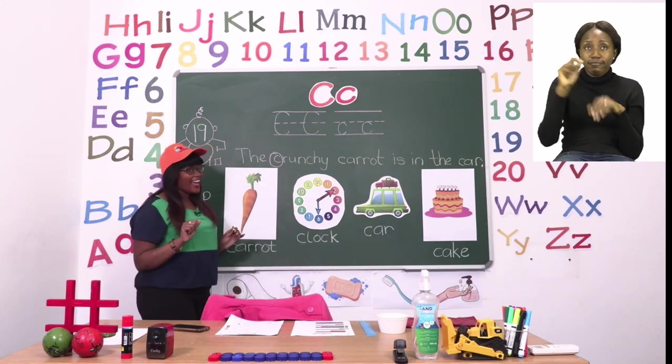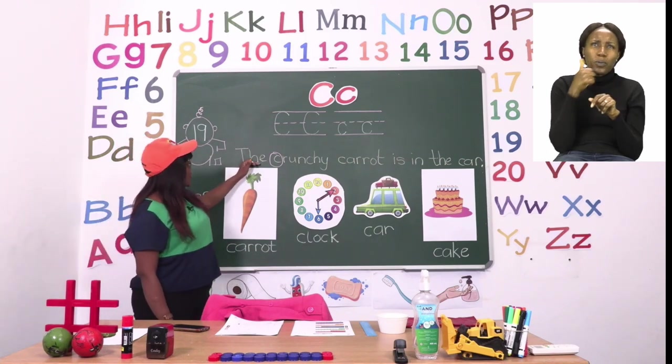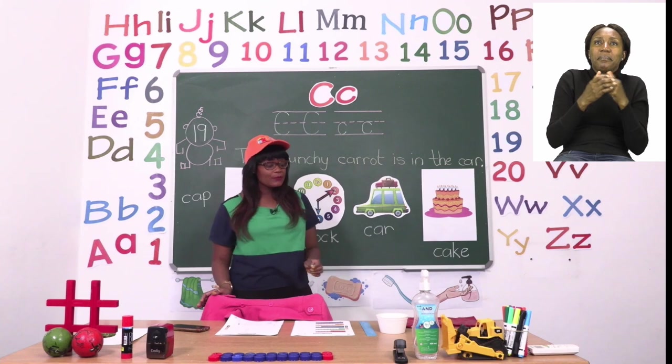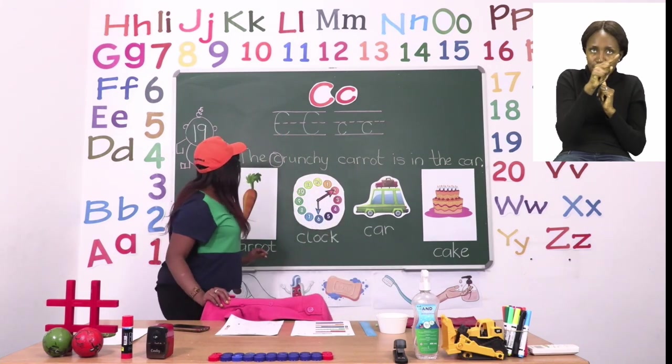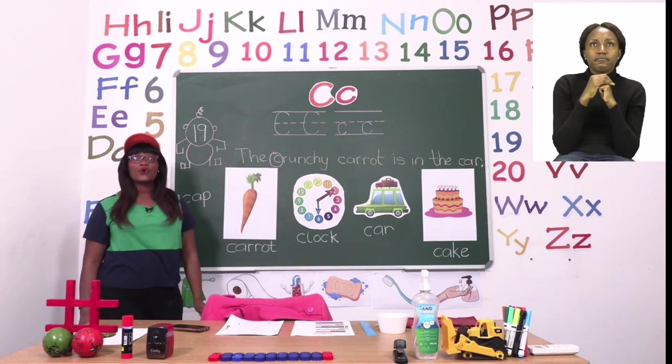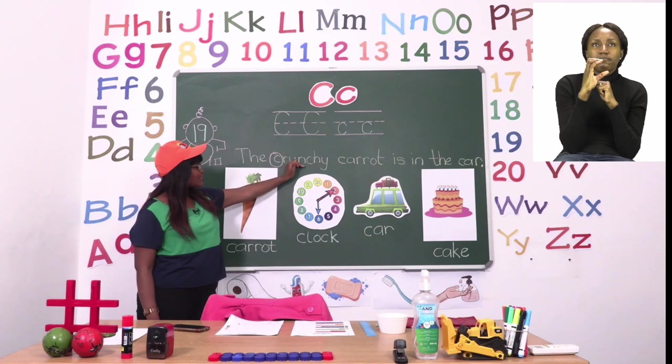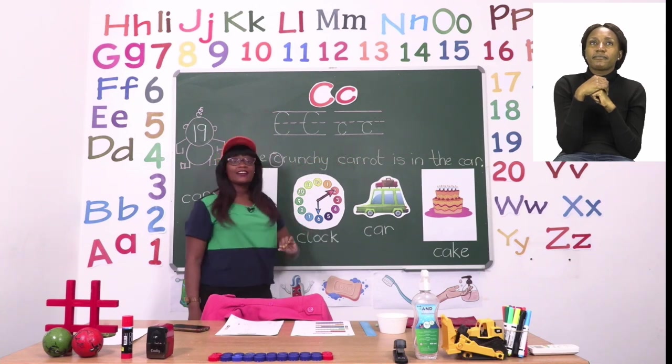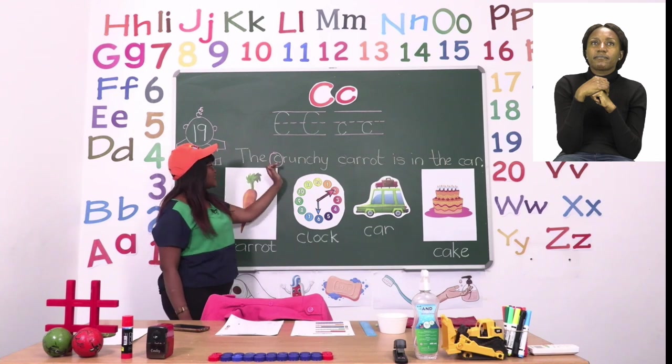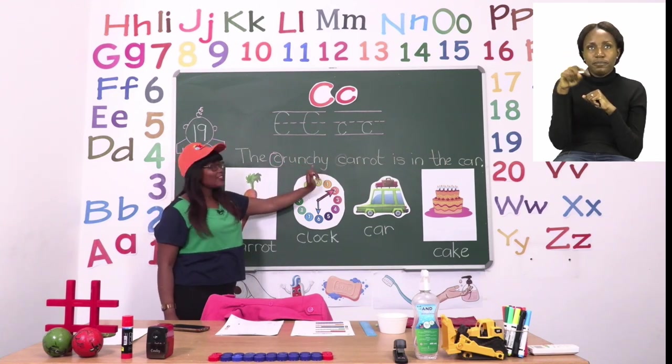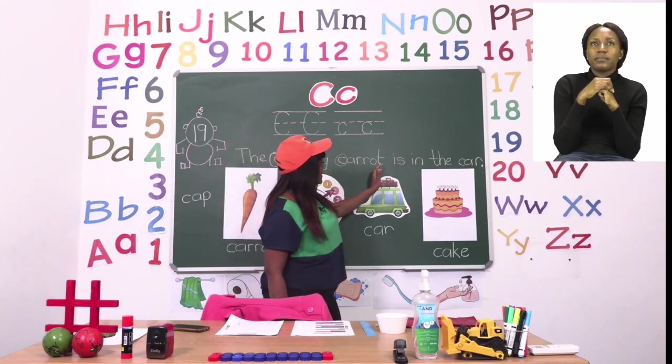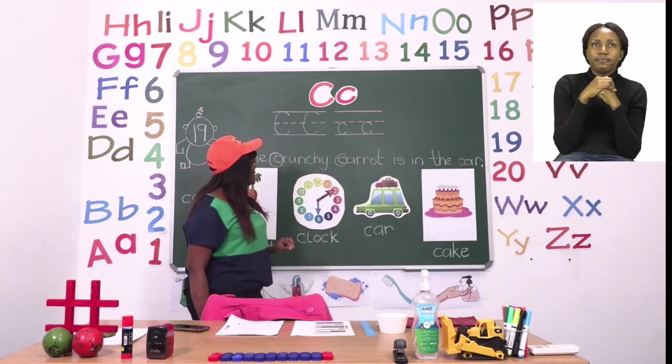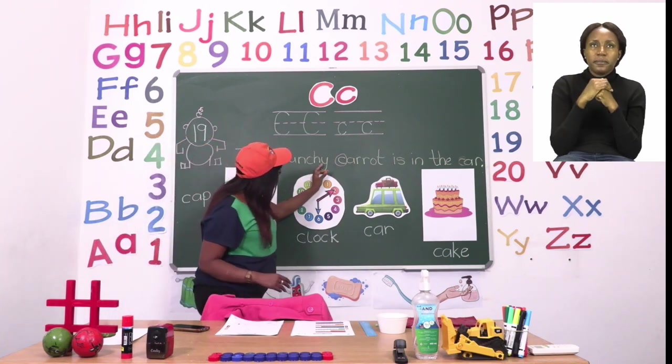So once you're done with those it is now time to do the sentence. You can see where we have a juicy carrot the sentence says the crunchy carrot is in the car and it's your job to circle all the k sounds. So I have done the first one which was crunchy. Then the next one is carrot. Remember we want the sound k so this one doesn't make a k sound it says crunchy so this is not a k sound. Let's move on the next one is the word car and it has a sound of k. Now you are done with that one the crunchy carrot is in the car good job.